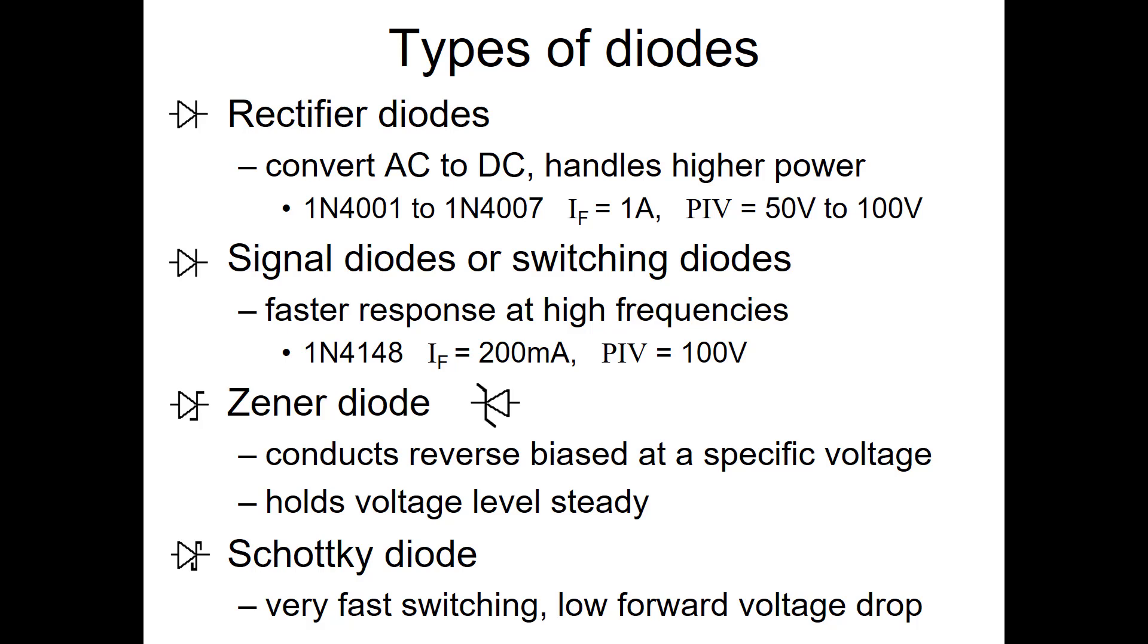Zener diodes are a particular kind of diode that's built to actually conduct in the reverse biased mode without breaking, and they're built so that at a specific voltage they will start conducting. They can be used to hold a voltage steady at that particular level, or to prevent conducting until that voltage is reached.